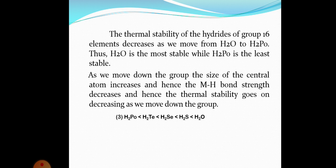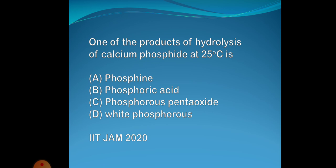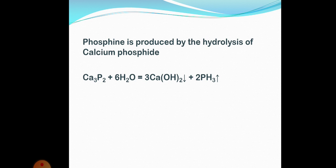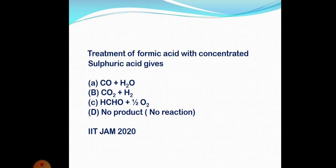The correct option is option 3, where H₂O is the most stable and H₂Po is the least stable. Moving to the second question from IIT JEE 2020: one of the products of hydrolysis of calcium phosphide at 25°C is phosphine. When calcium phosphide is hydrolyzed, the products are calcium hydroxide and phosphine. So the correct answer is option A — phosphine.